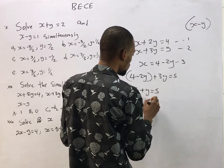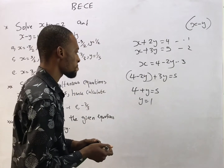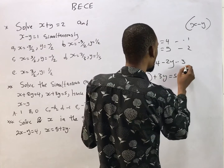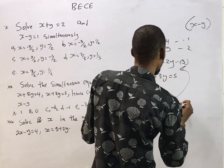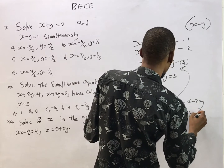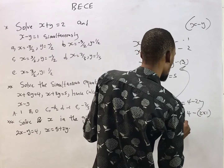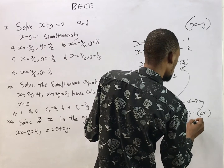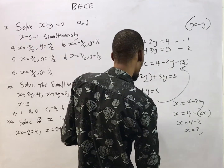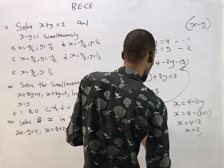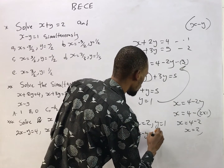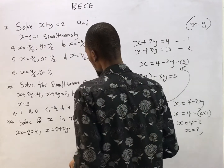So y equals 1. Putting the value of y into equation 3: s equals 4 minus 2 times 1, so s equals 4 minus 2, meaning s equals 2. Therefore s equals 2 and y equals 1. s minus y is simply 2 minus 1, which equals 1. So the answer is 1.